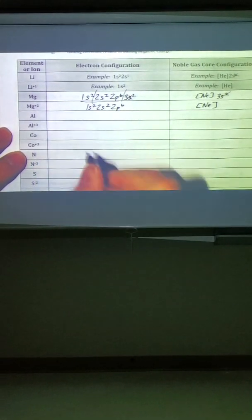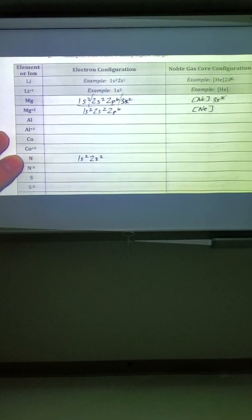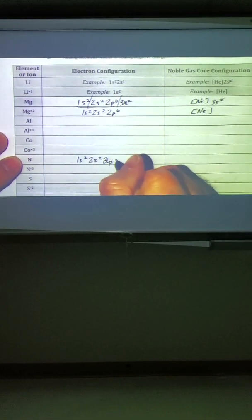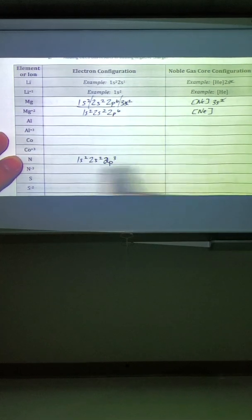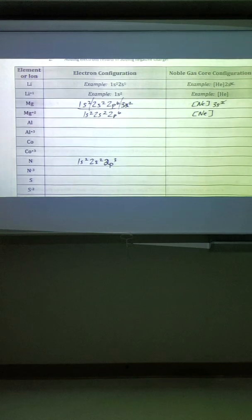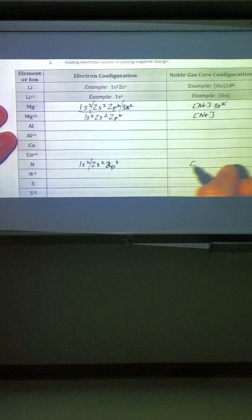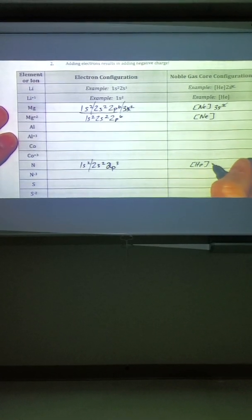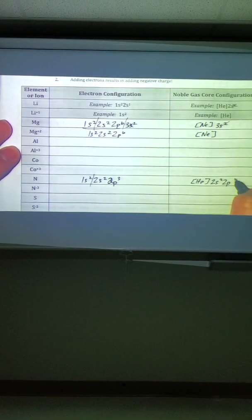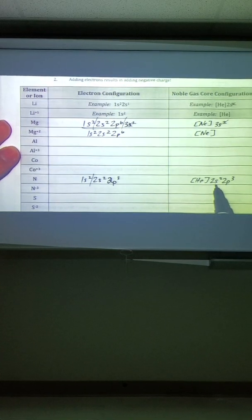So nitrogen, 1s2, 2s2. If we stop here, we're barely going to keep going. We have 2p3. So 2, 4, 3 makes 7. Nitrogen is number 7. So when this happens, take away the noble gas, we have helium, and what's left over? 2s2 and 2p3. So we could take away 5. That would be nitrogen plus 5. That's a lot of work.